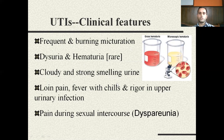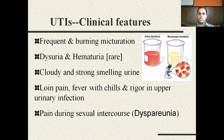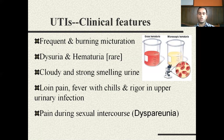There is cloudy and strong-smelling urine, which is due to urinary stasis or accumulation of urine in the bladder for a long period of time, which has also favored the urinary tract infection in the first place. There can also be glowing pain, fever with chills and rigors in upper urinary tract infection, and pain during sexual intercourse, also known as dyspareunia.